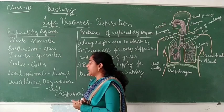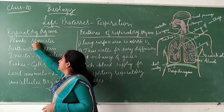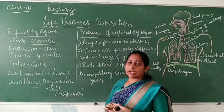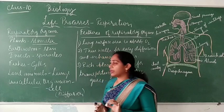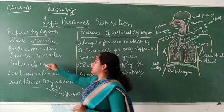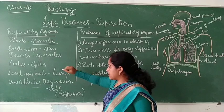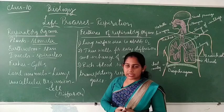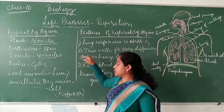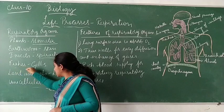In plants, the respiratory organ is stomata — tiny pores present on the surface of the leaf, and also on other green parts of the plant. Through stomata, plants exchange respiratory gases. In the case of earthworms, they use their skin for gas exchange. Insects have minute hole-like structures called spiracles through which gases are exchanged, entering into tracheal tubes.